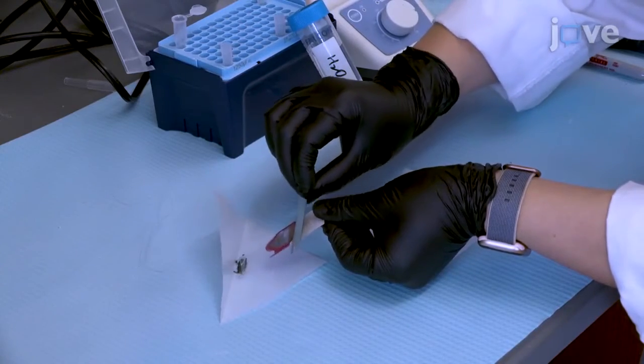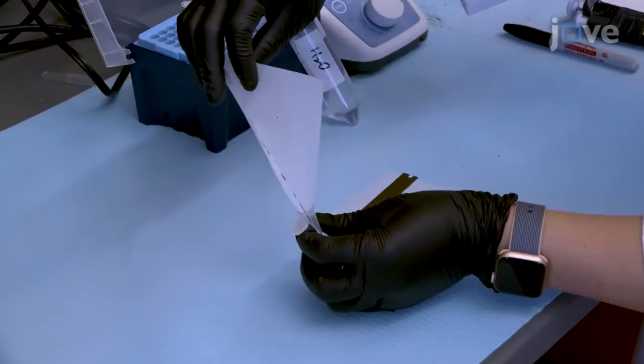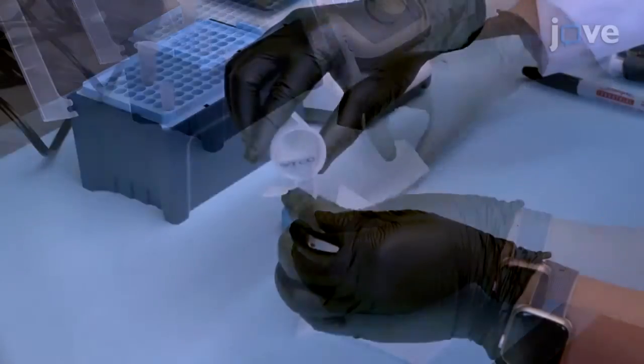Once dried, use a razor to split the mixture into two 1.5 milliliter centrifuge tubes and fill the tubes with water.